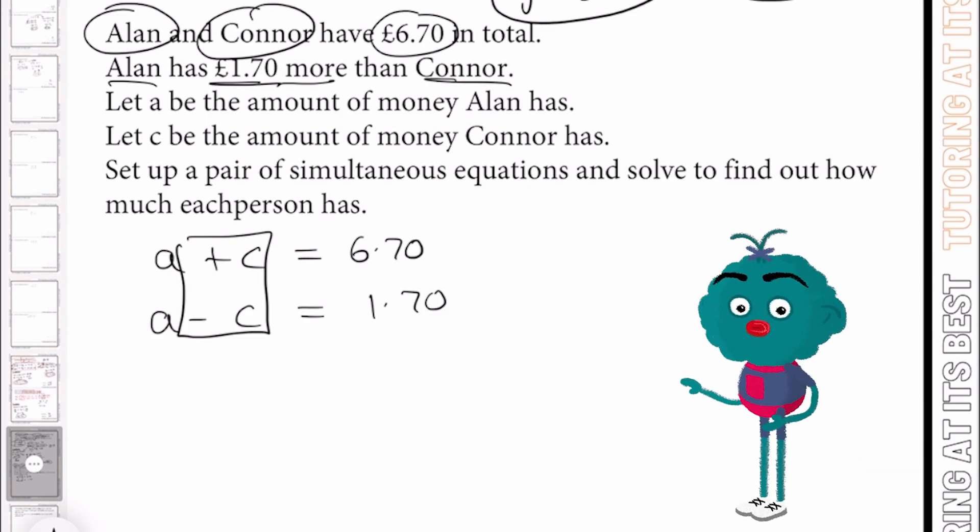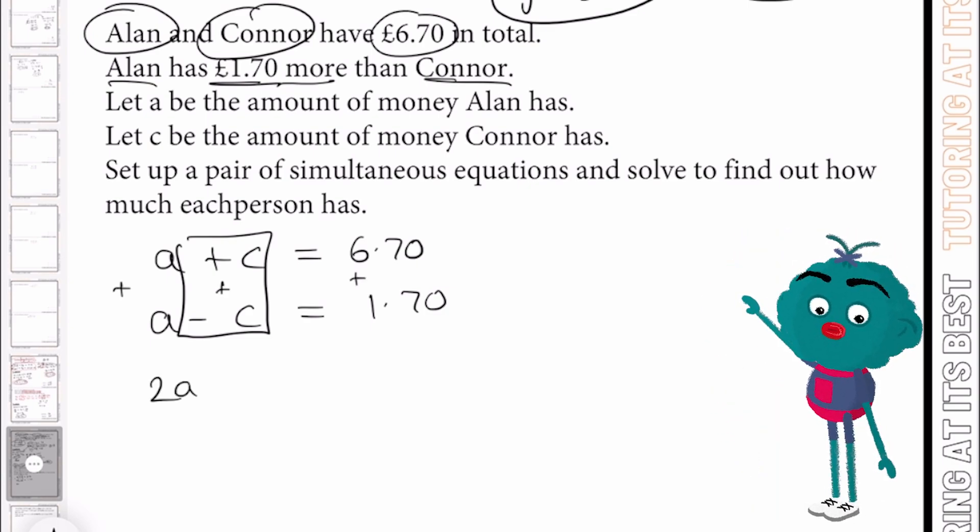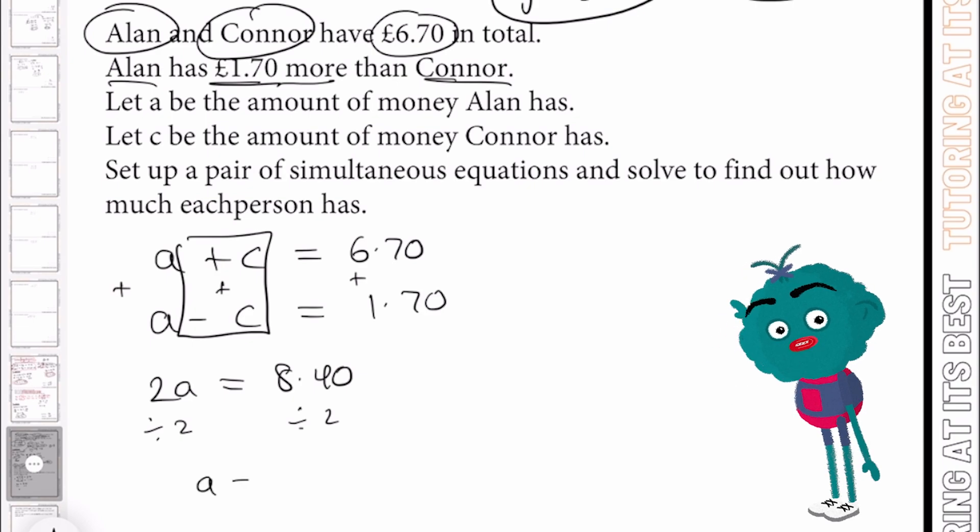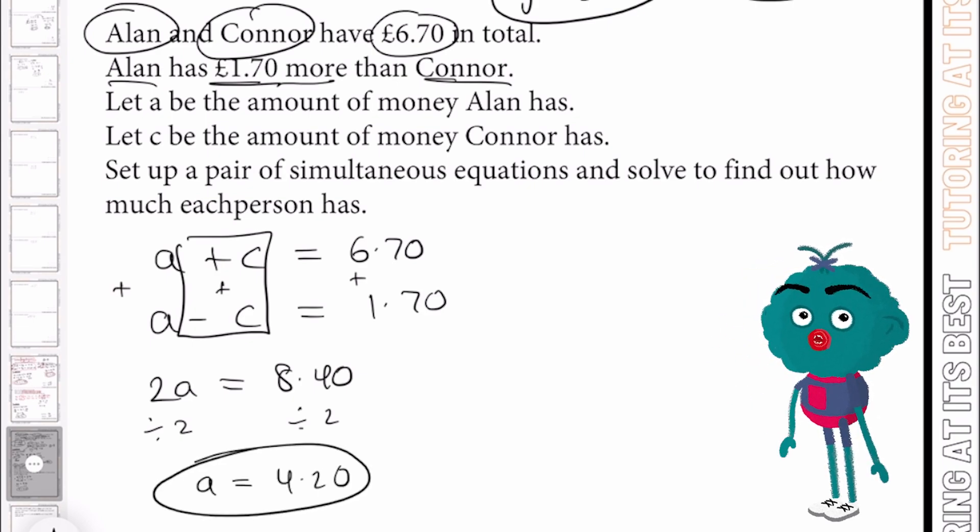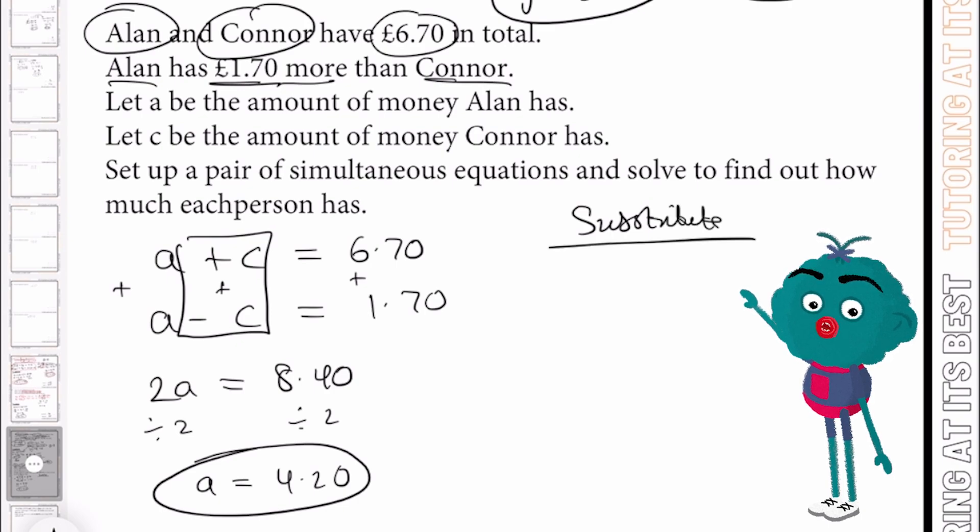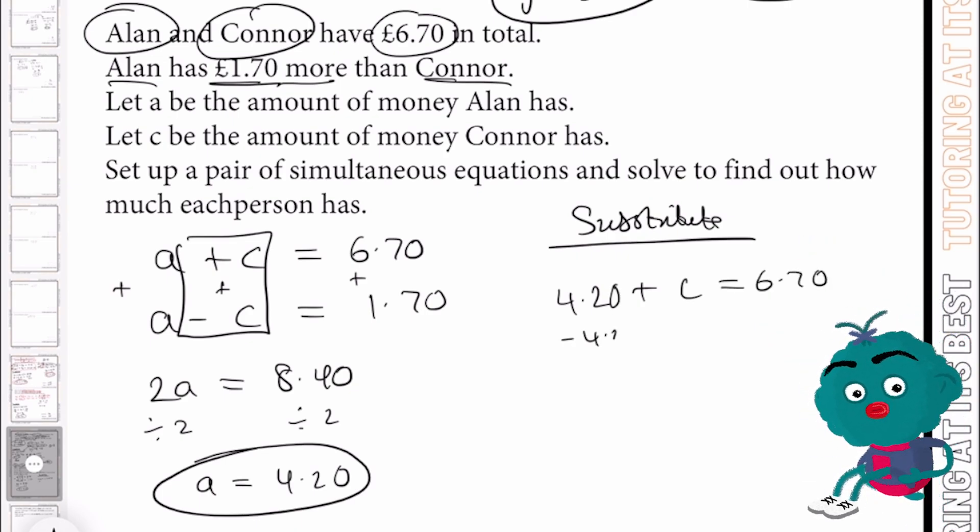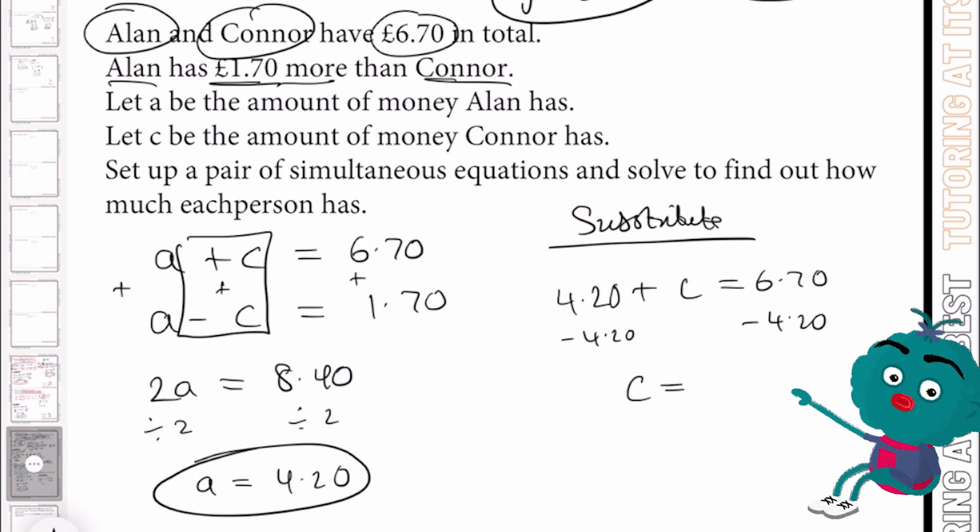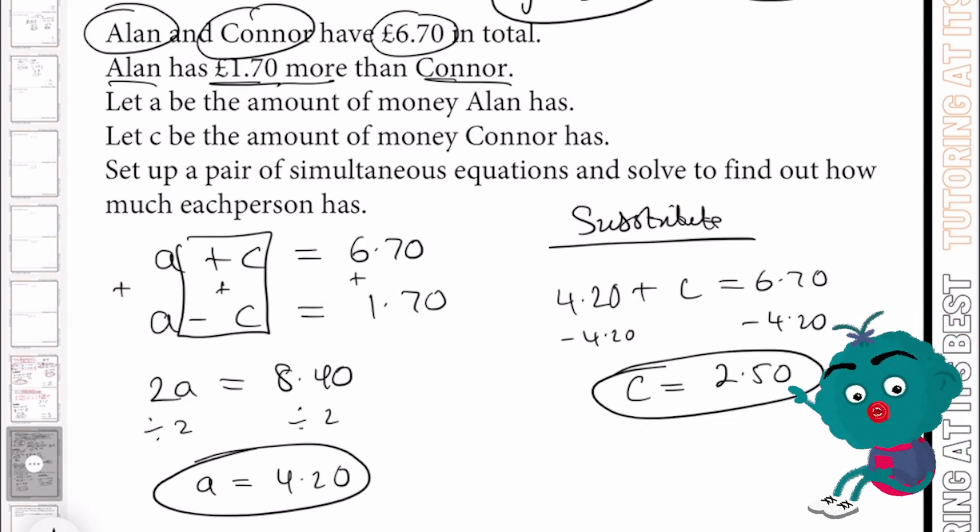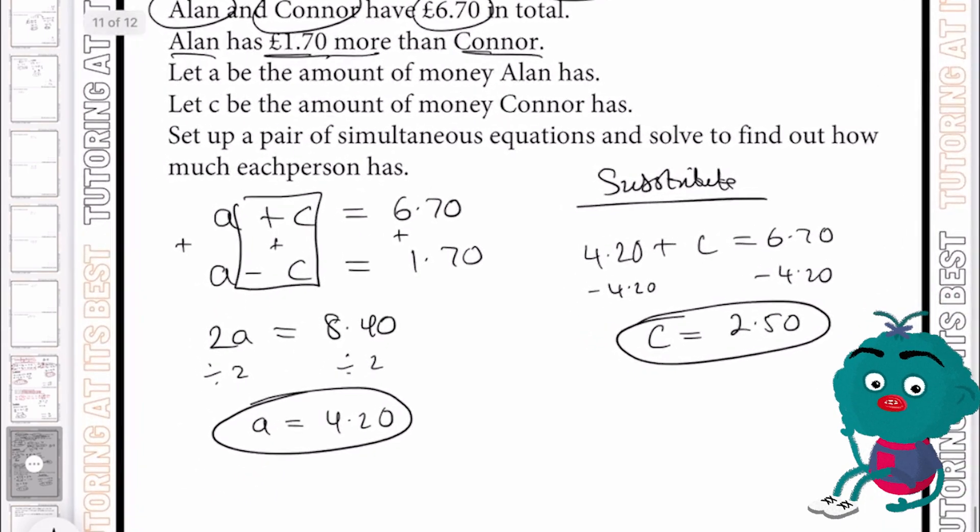So you can now see we have our coefficient the same for C. If we simply add these out, we'll have 2A which equals £8.40. And if we divide these by two, we'll be left with A being £4.20. So we now know that Alan has £4.20. And so let's now substitute this. So let's go for £4.20 plus our Connor, which equals £6.70 before subtracting £4.20 using our inverse operation. So we now have C equaling £2.50. And that there would be our answer. Alan having £4.20 and Connor having £2.50.